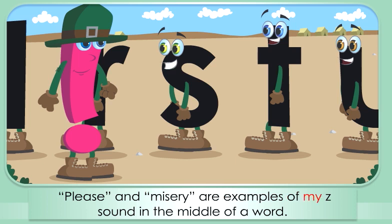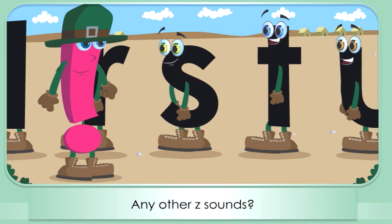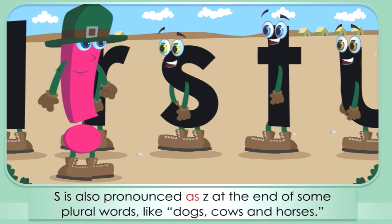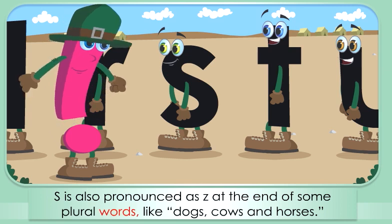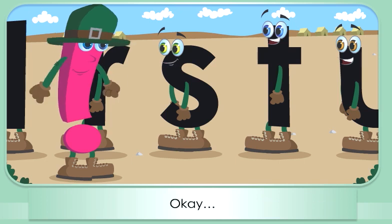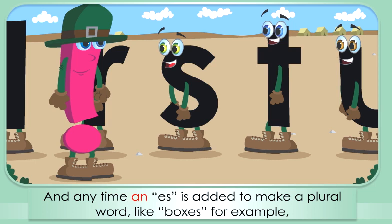Please and misery are examples of my Z sound in the middle of a word. Any other Z sounds? Lots of them. I also make the Z sound when contractions are used, like theirs and it's. S is also pronounced as Z at the end of some plural words like dogs, cows, and horses — but not cats. Cats has an S sound at the end.